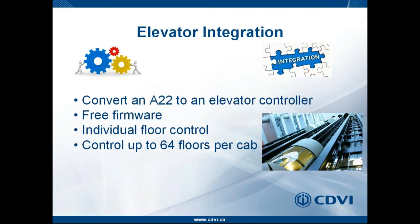The total combined floor capacity across the system is 256 floors. For example, in a 64-floor building, up to eight elevator cabs can each be controlled for all 64 floors. For buildings with fewer floors — such as 6, 8, or 12 floors — more cabs can be supported. The overall system capacity is 256 total floors managed across all cabs combined.